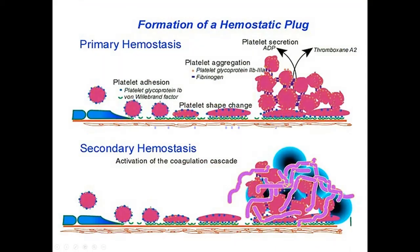Formation of a hemostatic plug is shown in this photograph. Number one is primary hemostasis: there is exposure of the extracellular matrix due to injury to the endothelium. The platelets come, change their shape, form aggregation, and ultimately engage fibrinogen to form a primary plug. More ADP and thromboxane A2 are released for recruitment of more platelets. In the lower half is secondary hemostasis, which is due to activation of the coagulation cascade, resulting in the formation of a fibrin plug.